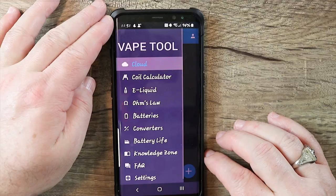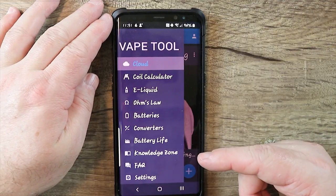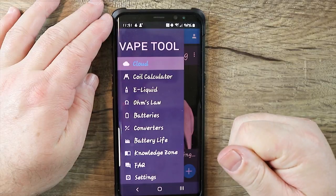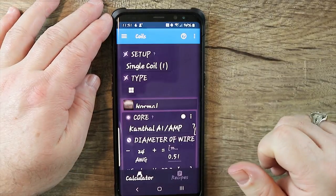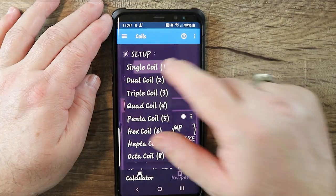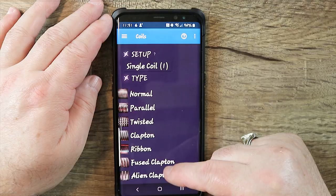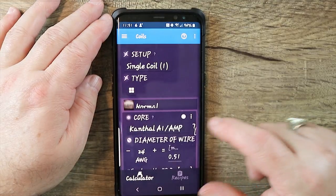Now, the first thing you want to do, you want to make sure you have some type of vape calculator if you're going to wrap your own wire. I use Vape Tool on Android. Go to the coil calculator section, select the type. You're doing a single round wire build. It's right there, normal, parallel, twist and Clapton, normal.